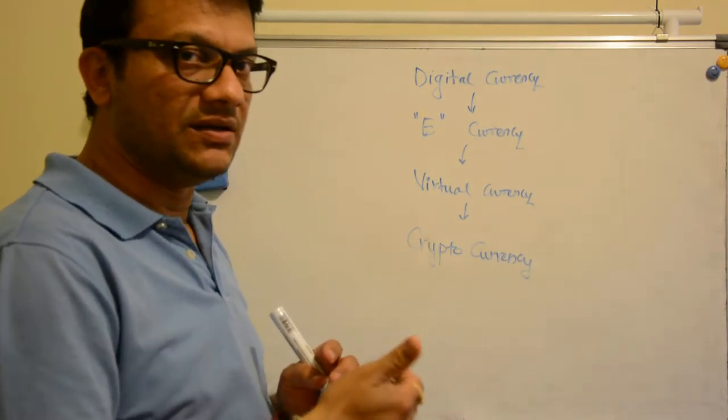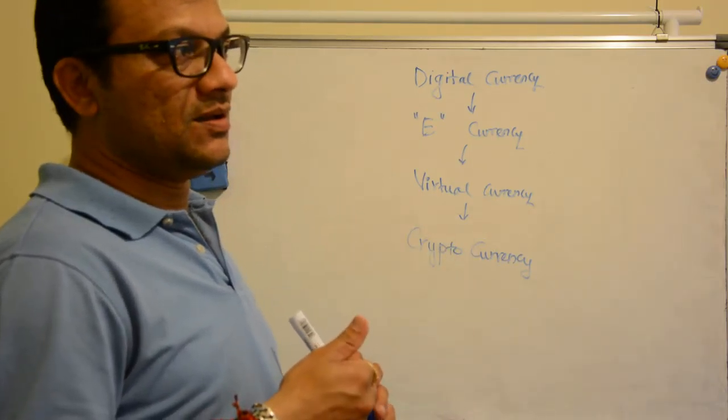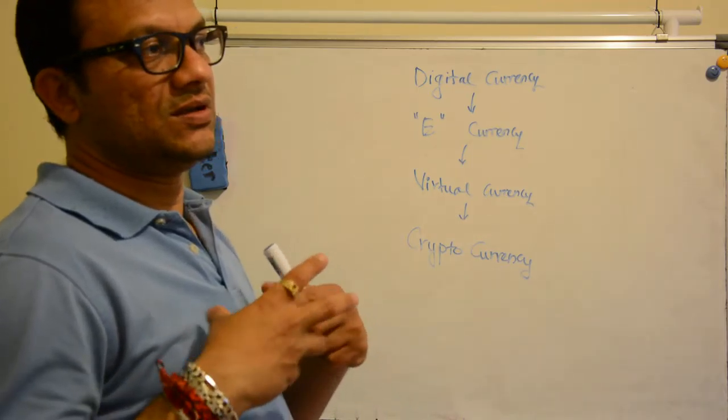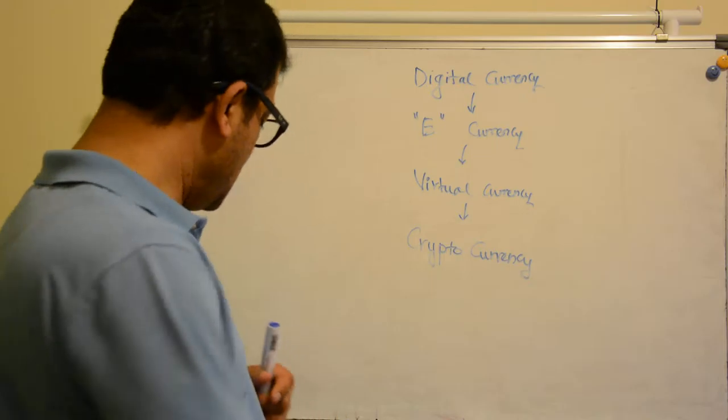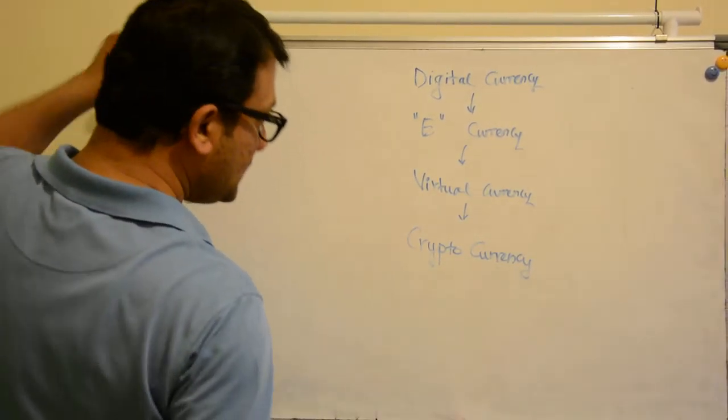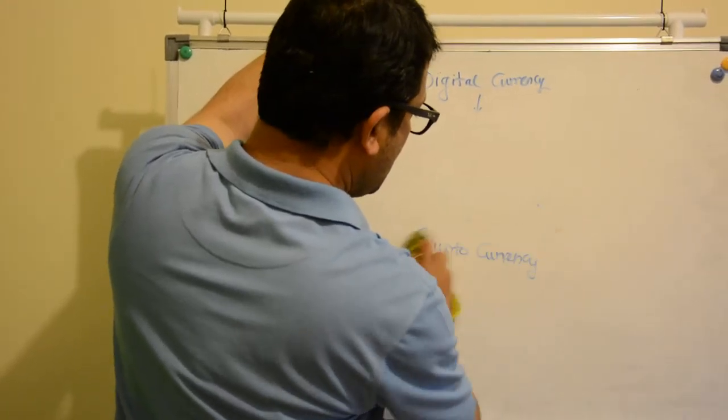generated digitally, generated online, generated on computer systems, generated out of cryptology or cryptography as we say. So that is what digital currency is known as.